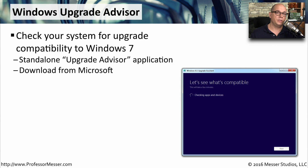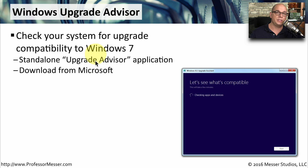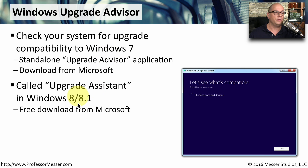If you want to install Windows 7 on your existing computer, you may want to check compatibility by running a program called the Windows Upgrade Advisor. You can download this directly from Microsoft, or there is a standalone application you can run from the installation media of Windows 7. In Windows 8 and 8.1, this is called the Upgrade Assistant, and again you can download this directly from Microsoft's website.